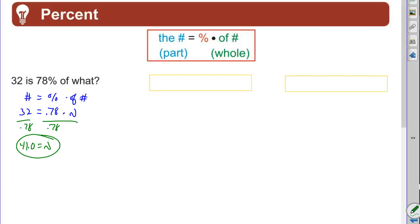32 is 78 percent of 41. You know what, that makes sense because 78 percent, that's over—it's around 80. Yeah, my answer makes sense.